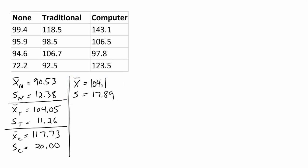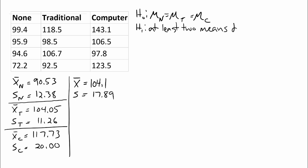One-way ANOVA is used to test a null hypothesis that the population means are equal. Here, the null hypothesis is that the population mean of the no-tutoring group equals the population mean of the traditional tutoring group, which equals the population mean of the computer-based tutoring group. We test that against an alternative hypothesis that at least two of the means are different. Keep in mind that is not the same as saying all means are different, so we do not write it as μ_n ≠ μ_t ≠ μ_c.